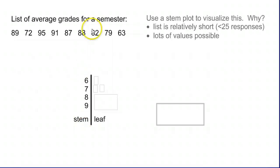You have the stem on the left, the bigger digit. So in this number 89, the stem would be the 8. And then you have the leaf - the leaf is the smaller number, the ones place in this case, so the 9, and that would be plotted on the right.